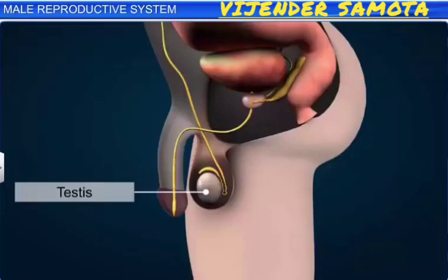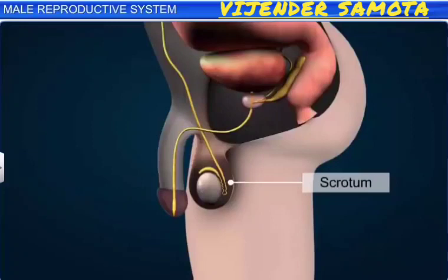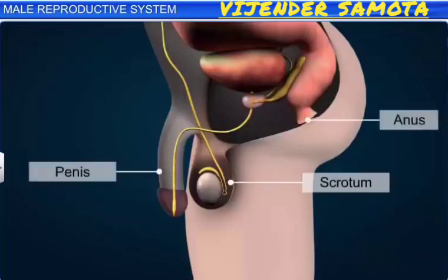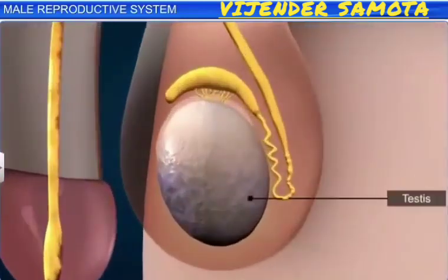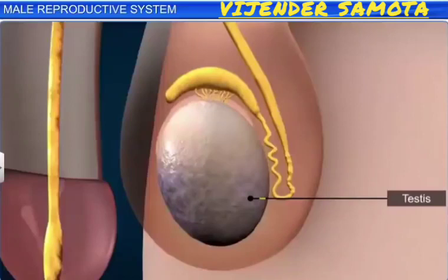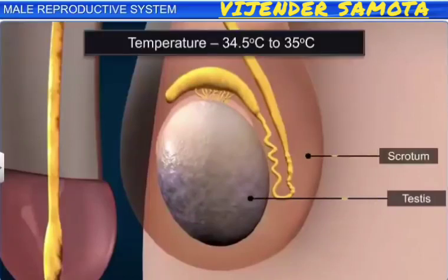The testes are covered by a sac-like protuberance of skin and muscles called the scrotum. The scrotum lies between the penis and the anus. The testes need to be at a temperature of 2 to 2.5 degrees less than the body temperature to produce sperms. Hence, the scrotum is outside the body and has a temperature lower than the body.